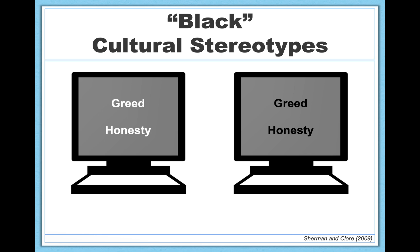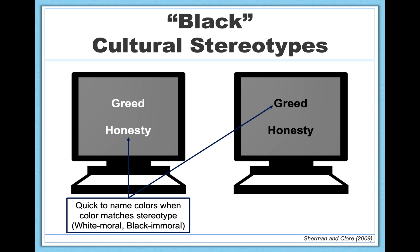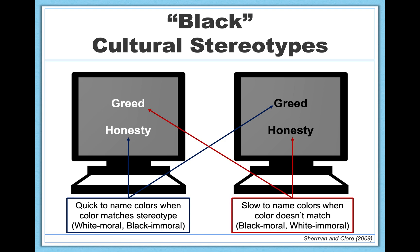In another study, researchers measured their mostly white participants' automatic associations between the colors white and black and words representing immorality, such as greed, and morality, such as honesty. The results showed that participants named colors faster when the associations were consistent with people's stereotypes — for example, white paired with moral words and black paired with immoral words — and they were much slower when those were inconsistent. In a follow-up study, they also found that priming immorality by having participants hand-copy an unethical statement speeded up the identification of words in the black font.